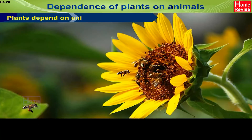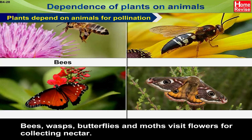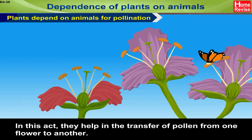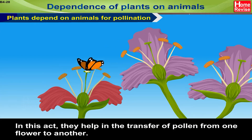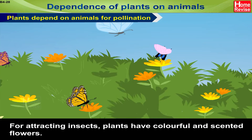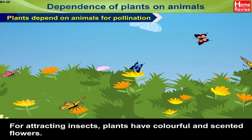Plants depend on animals for Pollination. Bees, Wasps, Butterflies and Moths visit flowers for collecting nectar. In this act, they help in the transfer of pollen from one flower to another. For attracting insects, plants have colourful and scented flowers.